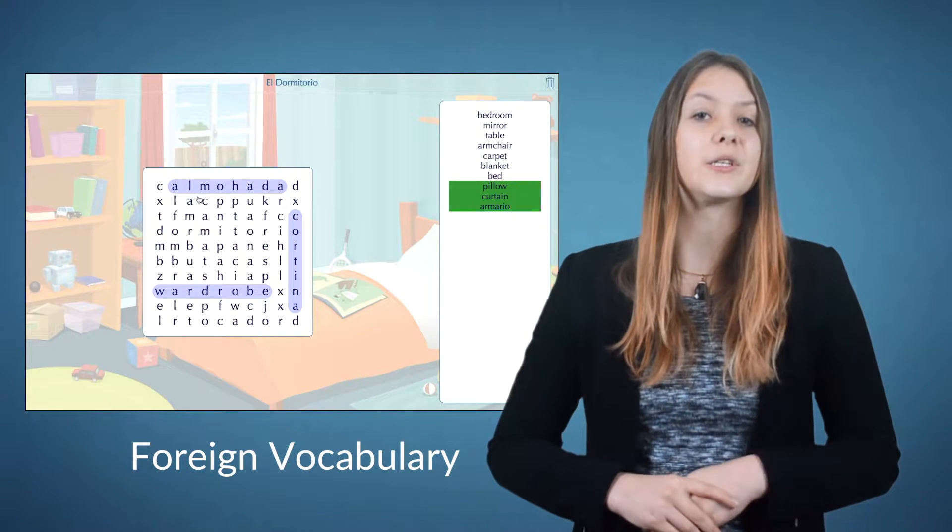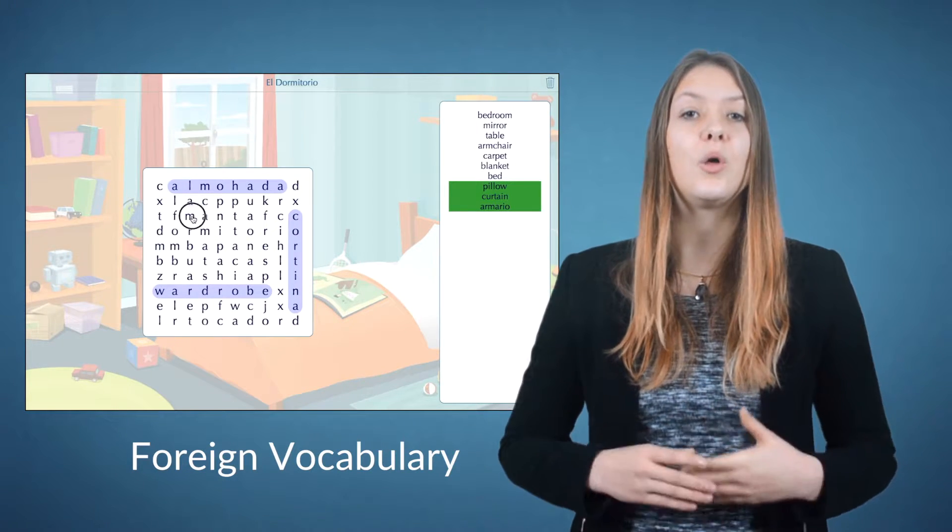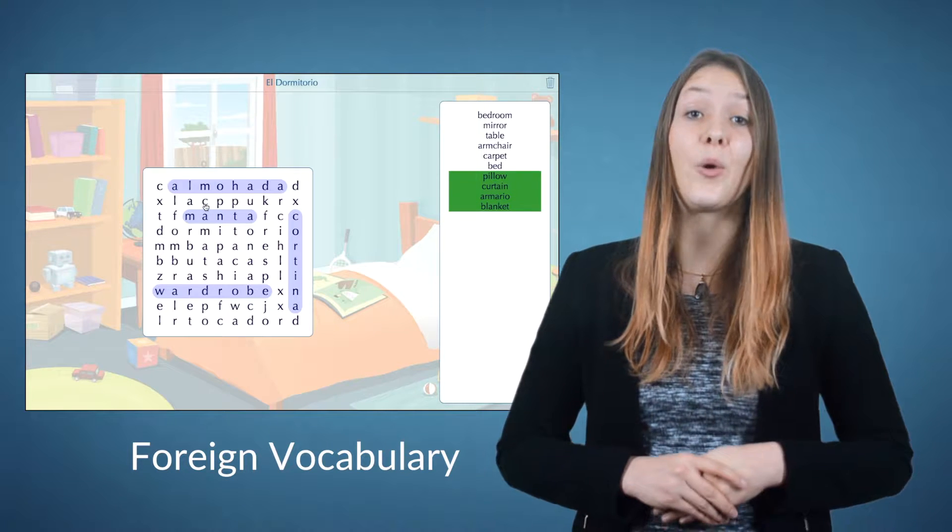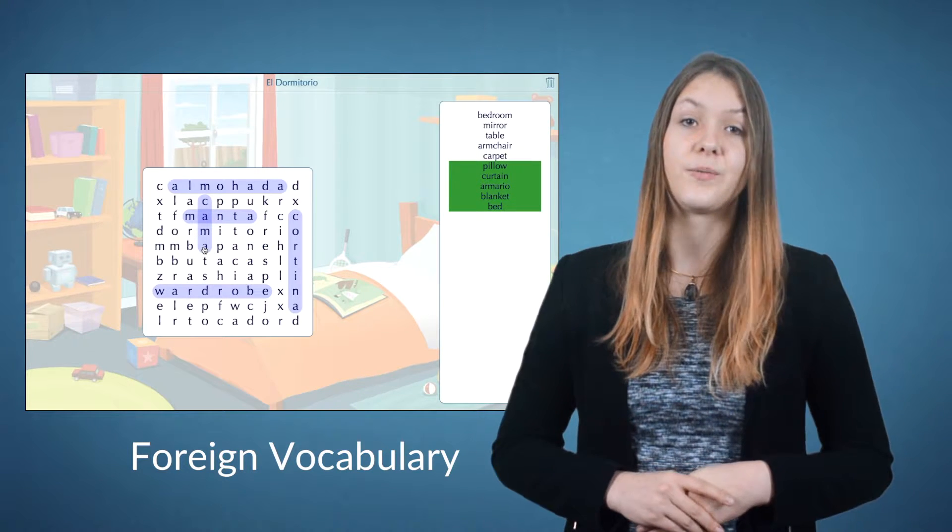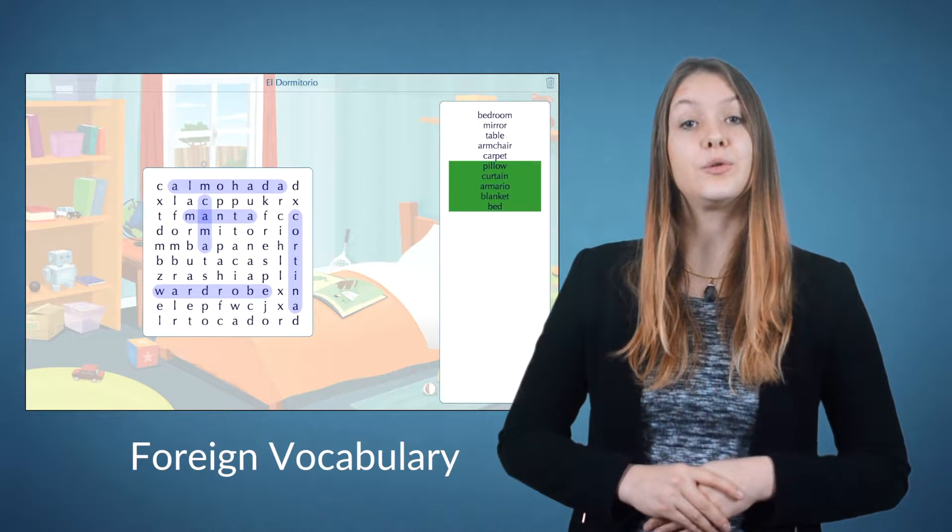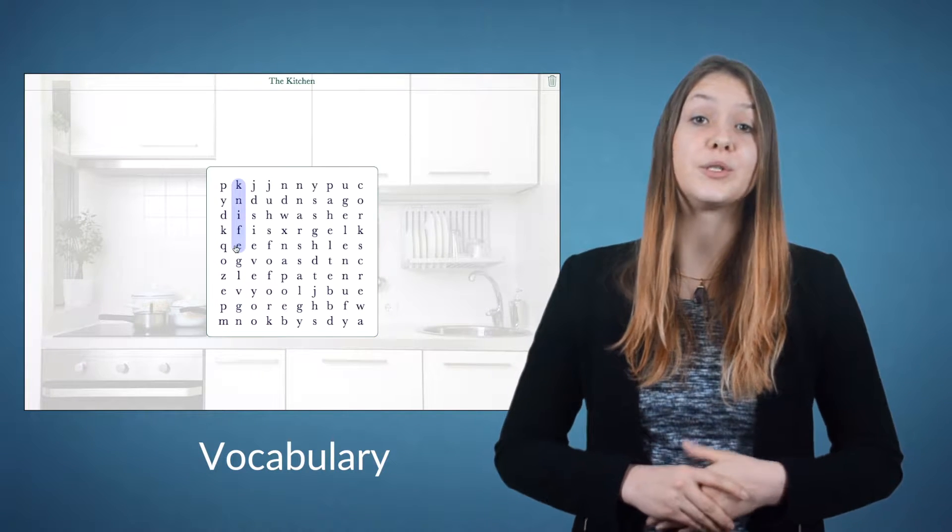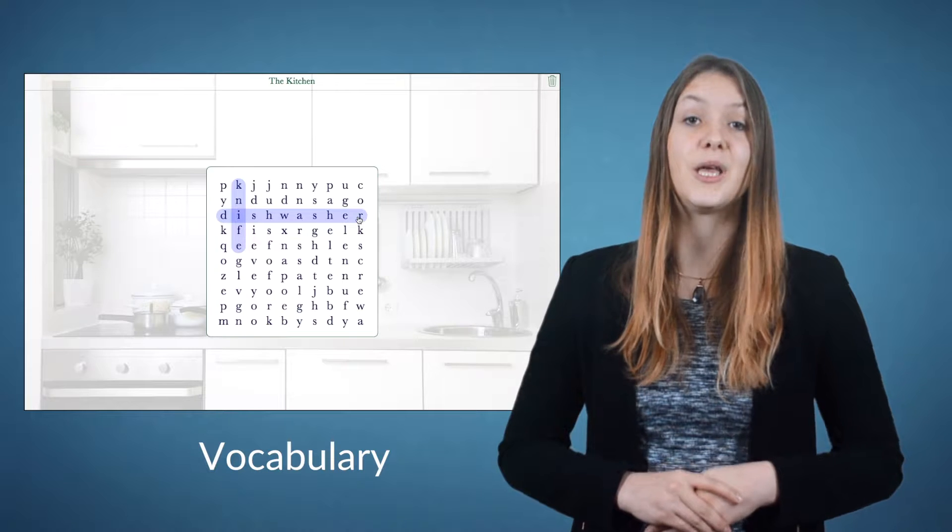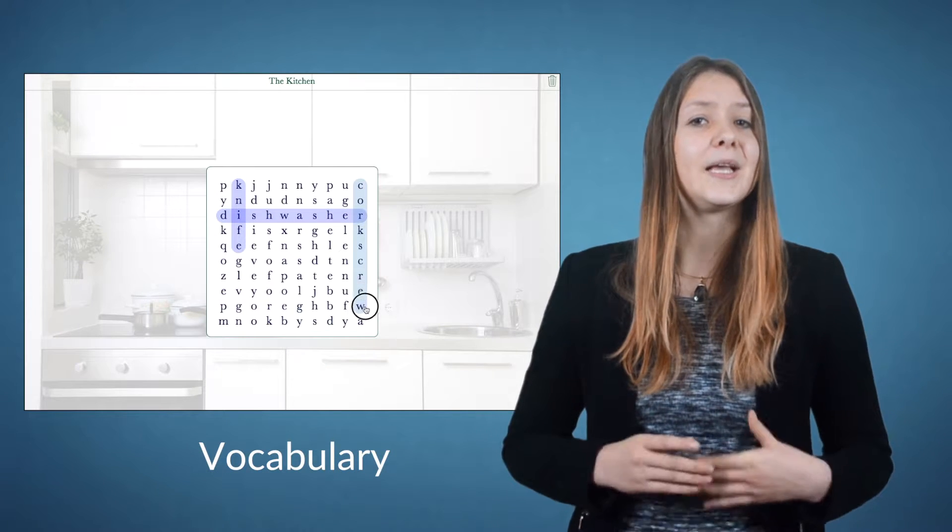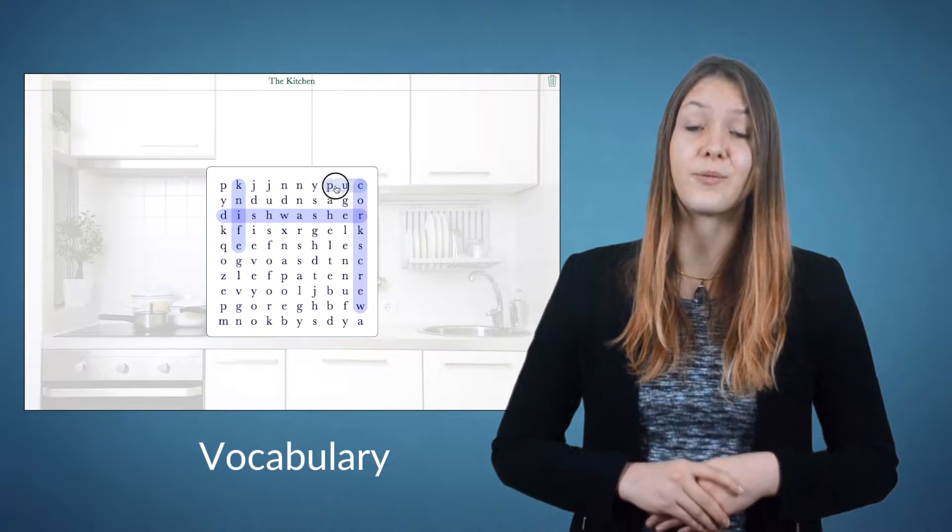Instead of just having horizontal and vertical words, also place words diagonally or even in a reverse direction. You can also leave out the clues or make the grid bigger. This English word search puzzle contains words in all directions and doesn't have any clues, except that you have to look for objects from the kitchen.